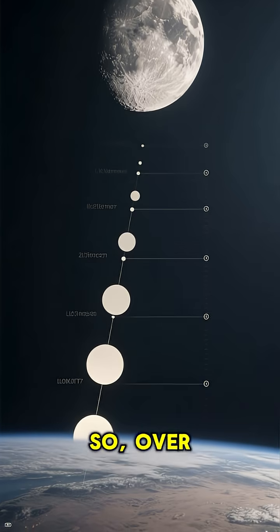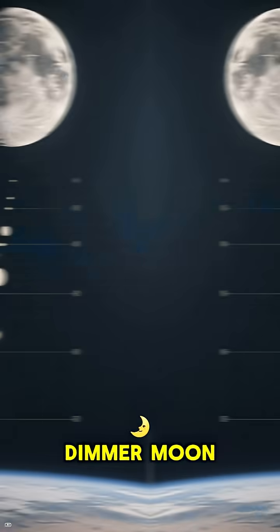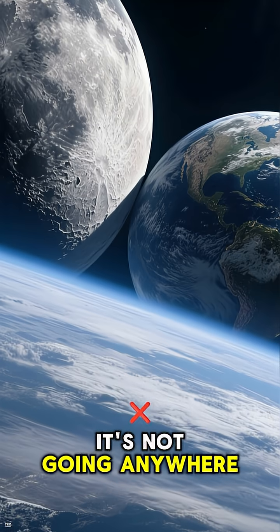So, over millions of years, our nights will have a slightly smaller, dimmer Moon. Don't worry, though. It's not going anywhere fast.